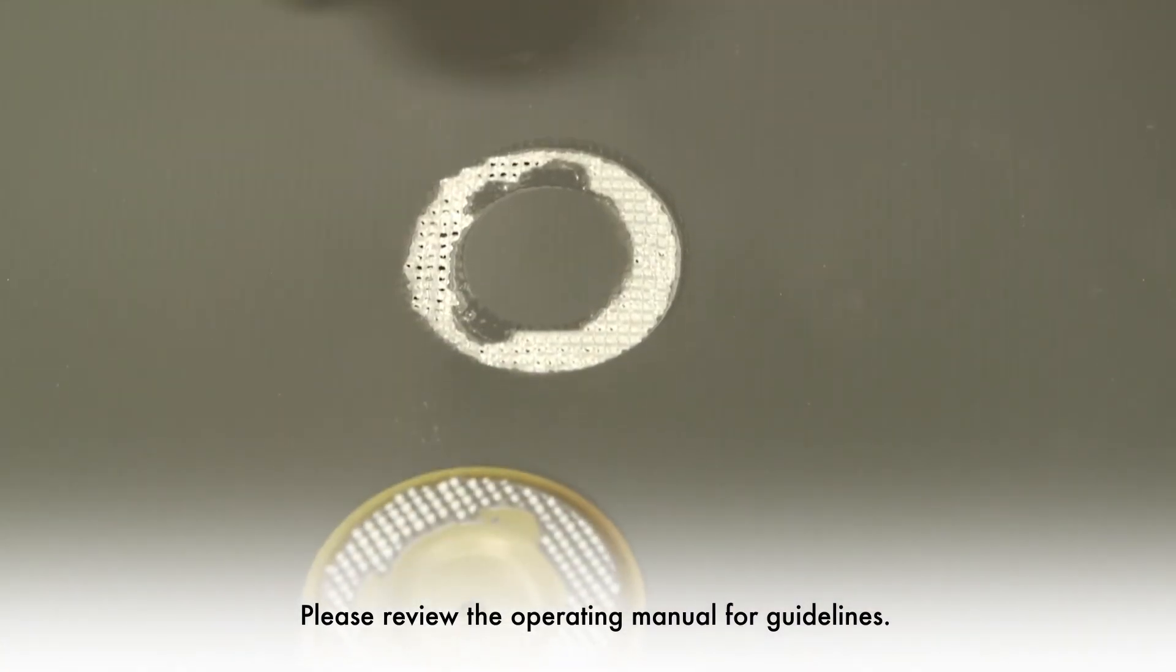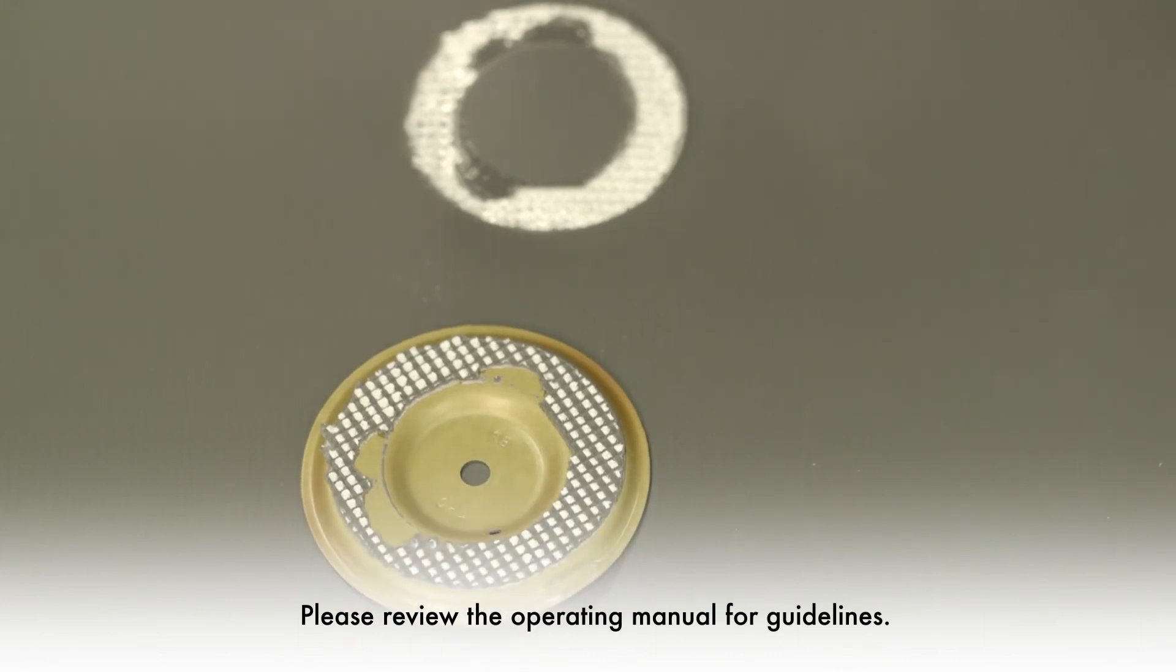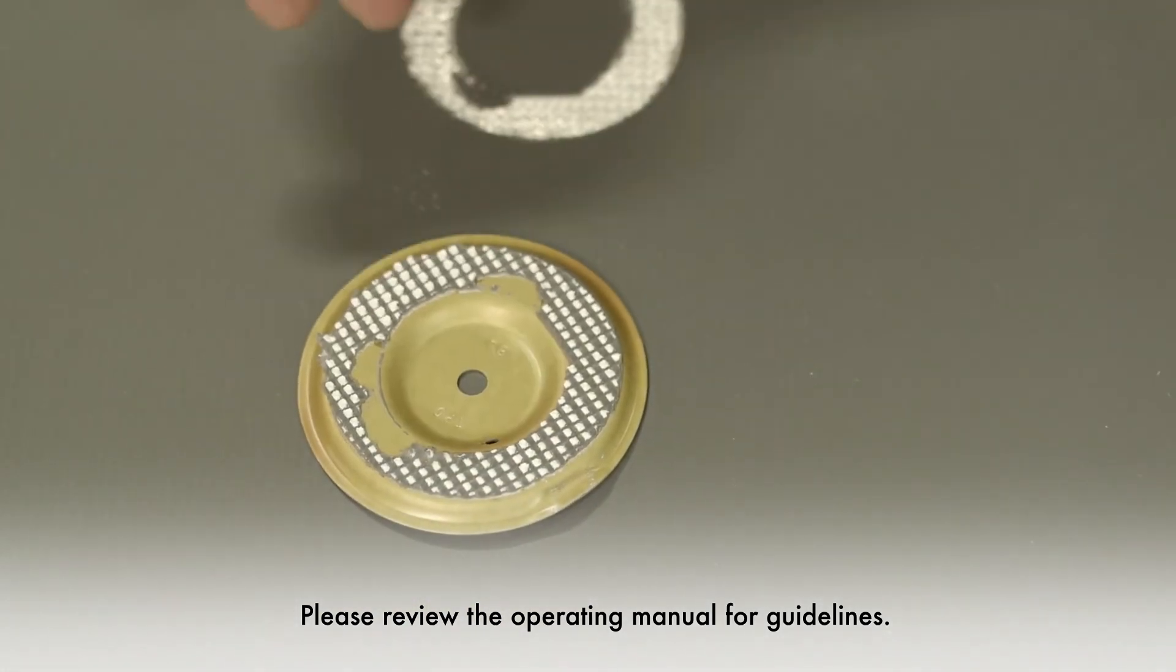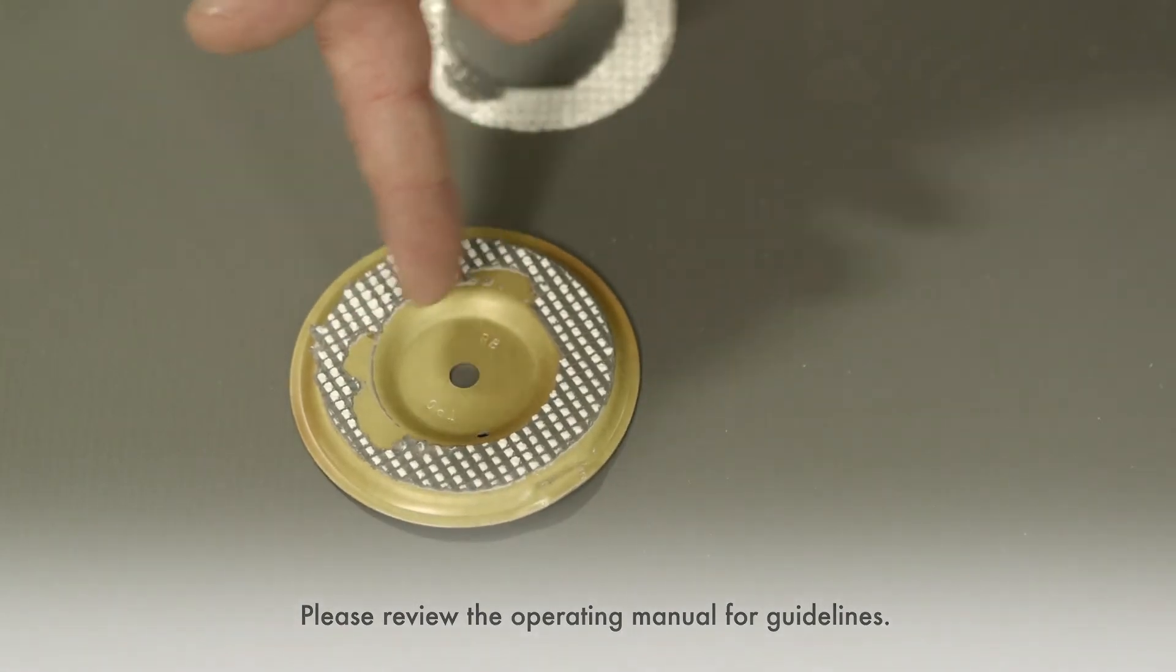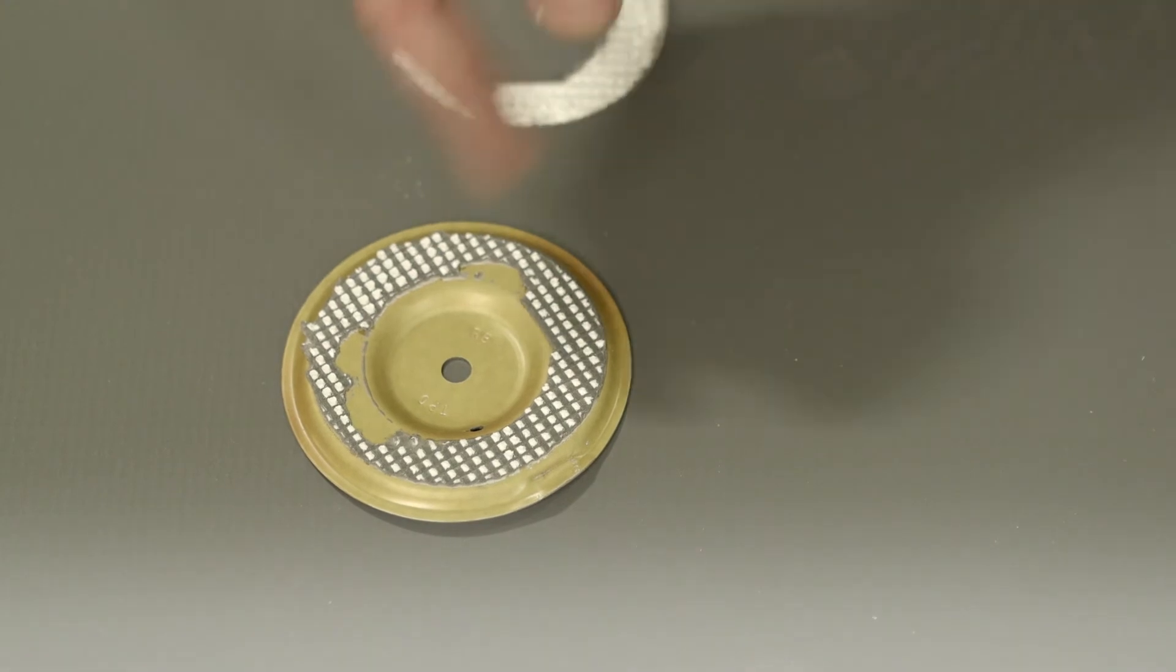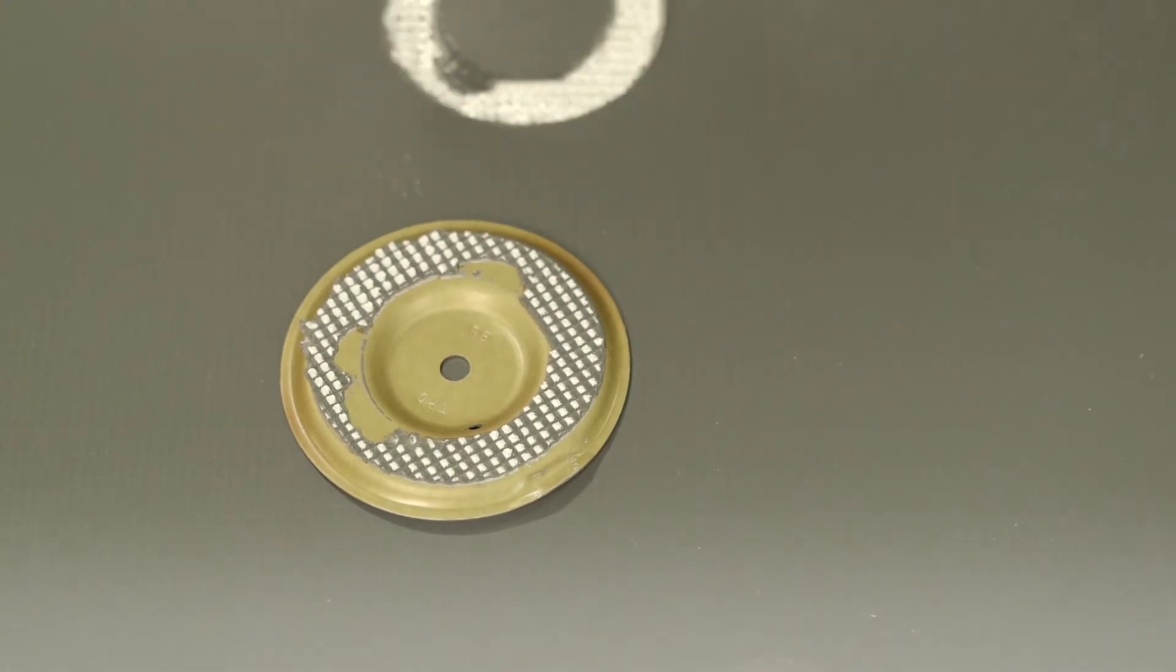All right, upon visual inspection of our first energy setting zero weld, we can clearly see that it's probably not enough energy. How do I know that? We've got some voids here in our 360 degree circle. So zero is not quite enough energy for an optimal bond. Let's move on to the next weld.